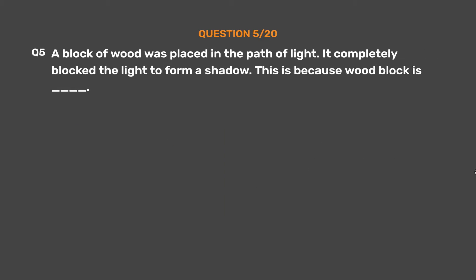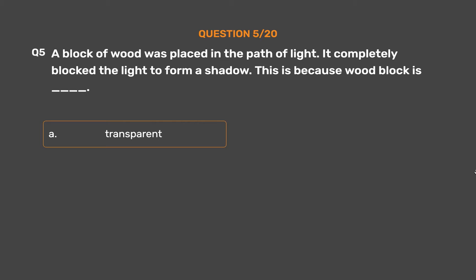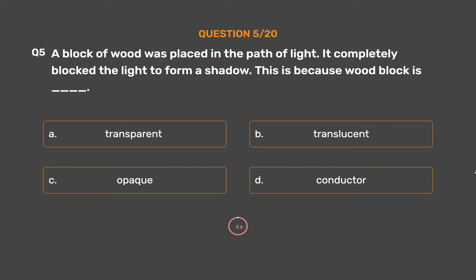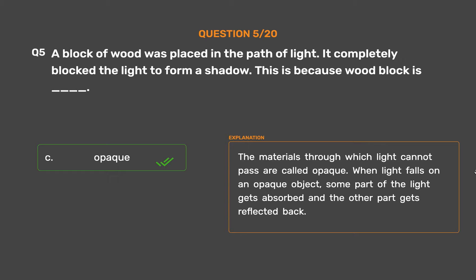Question number 5. A block of wood was placed in the path of light. It completely blocked the light to form a shadow. This is because the wood block is ___. Option A: Transparent. Option B: Translucent. Option C: Opaque. Option D: Conductor. The correct answer is Option C, Opaque. The materials through which light cannot pass are called opaque. When light falls on an opaque object, some part of the light gets absorbed and the other part gets reflected back.